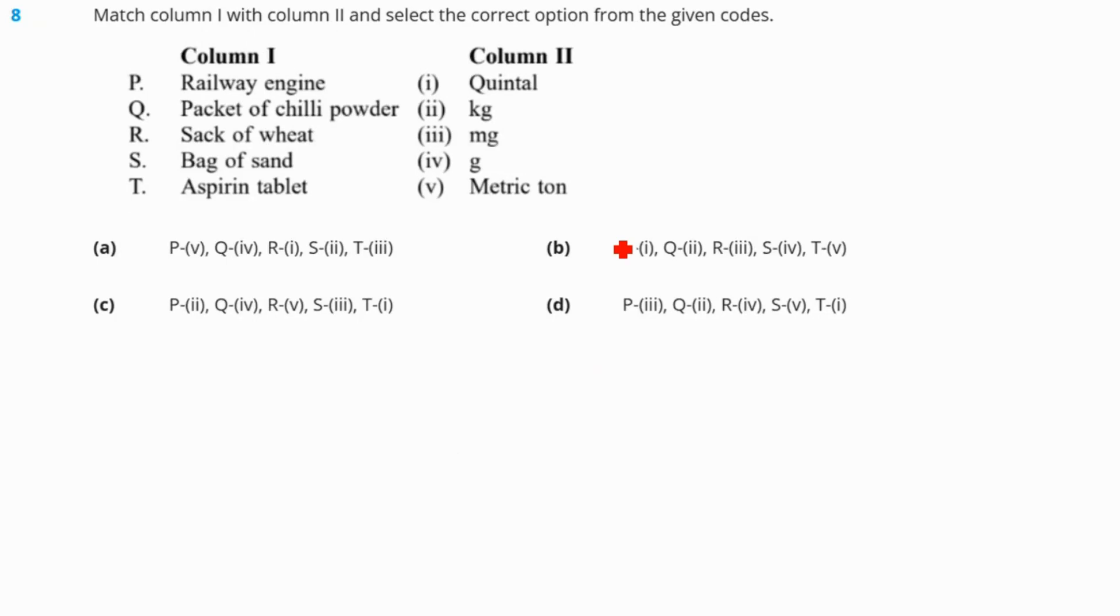Question number 8. Match column 1 with column 2 and select the correct option from the given codes. Railway engine is in kilograms or megatons. Definitely. This is P. Then packets of chili powder in gram. This is Q. Then sacks of wheat will be in quintal definitely. This is R. Then bag of sand and aspirin tablet will be in milligrams. So this is T. So our correct answer is option number A.